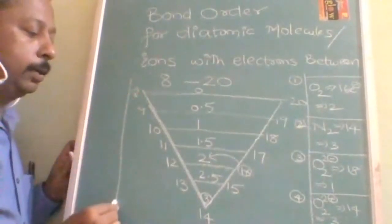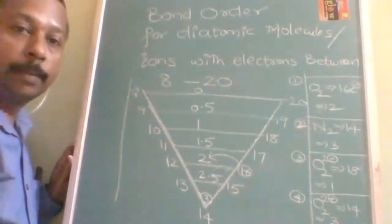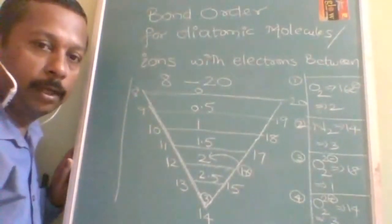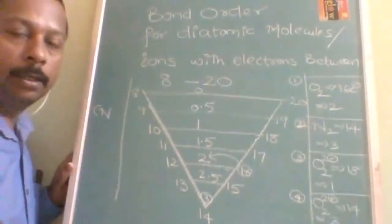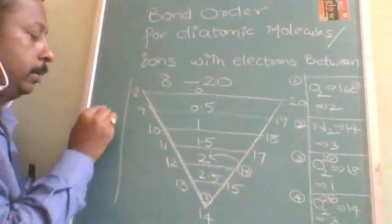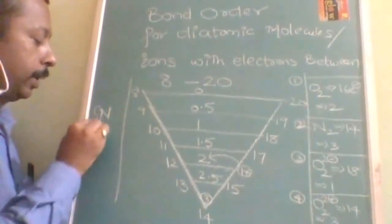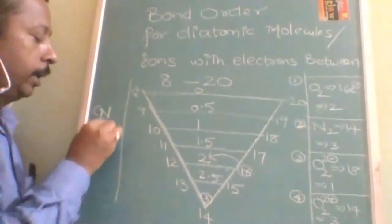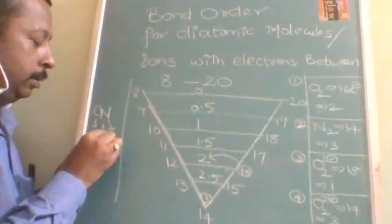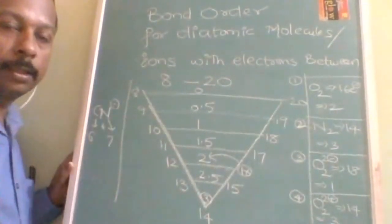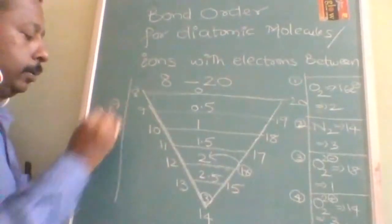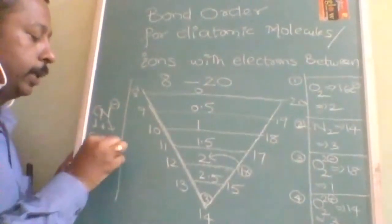OK, now let us see heteroatomic. It is applicable to heteroatomic molecule also. OK, let us take CN. What we should take? CN. OK, so CN means carbon will be 6 and nitrogen will be 7. Let us take CN minus.